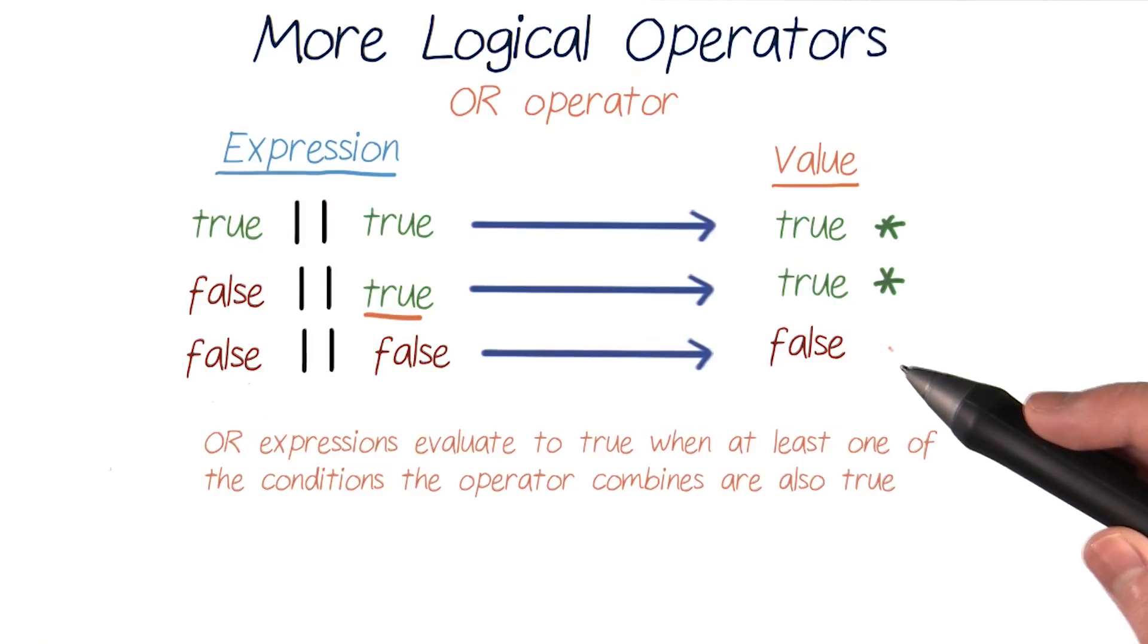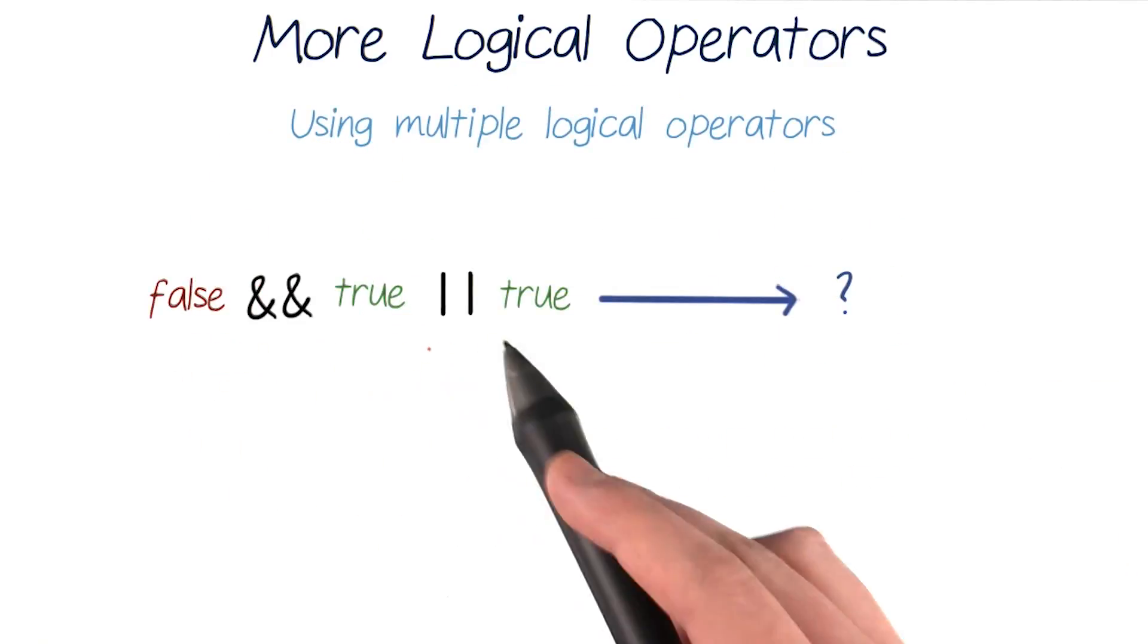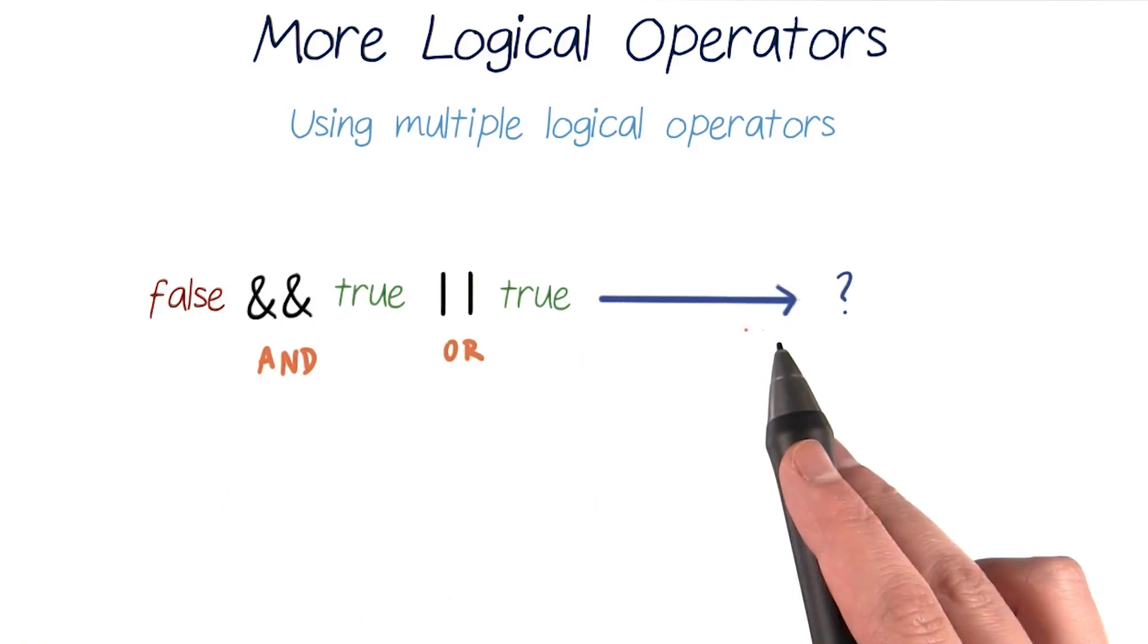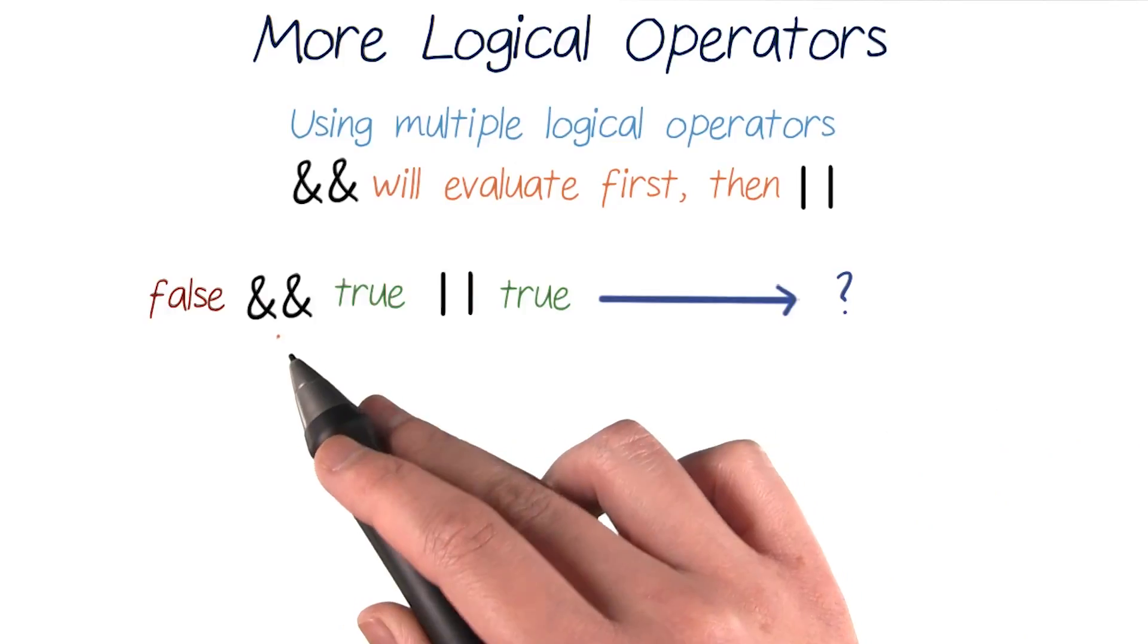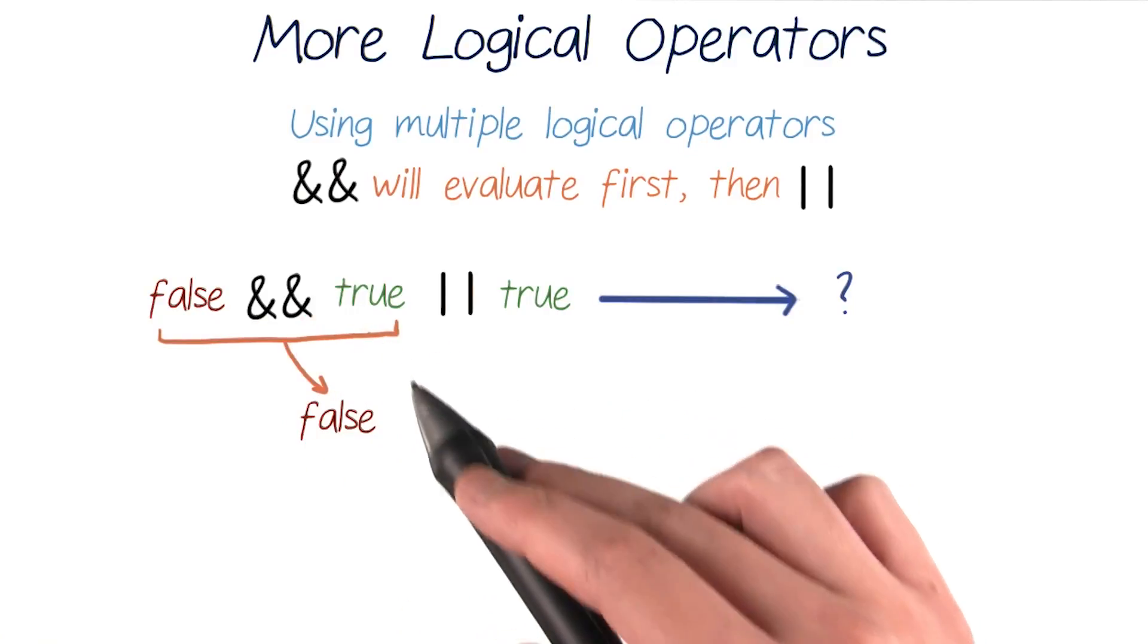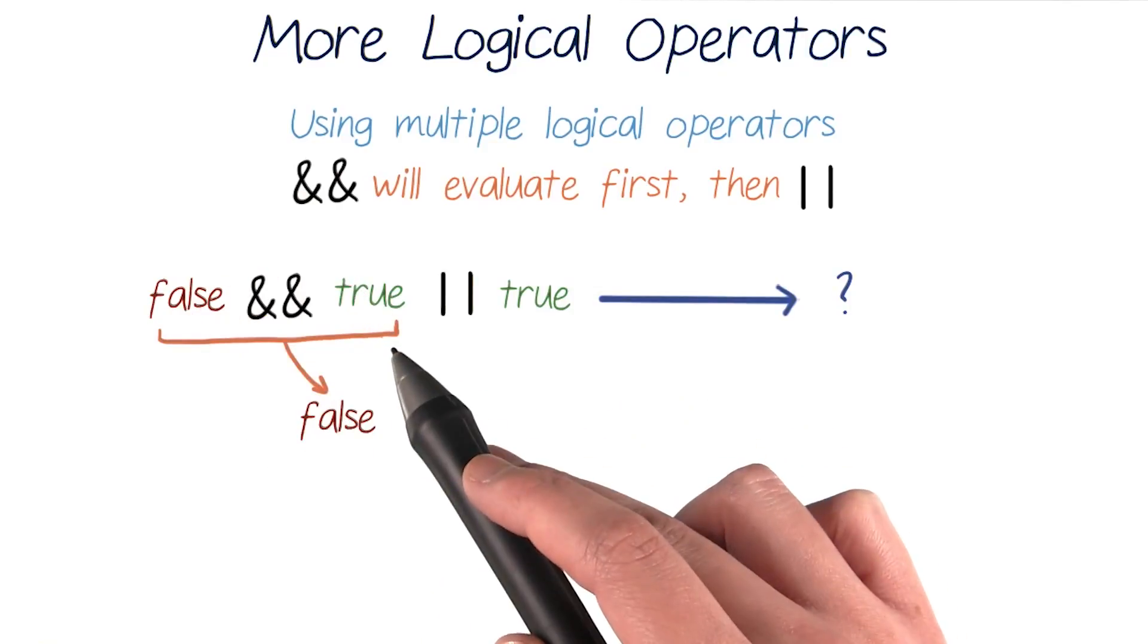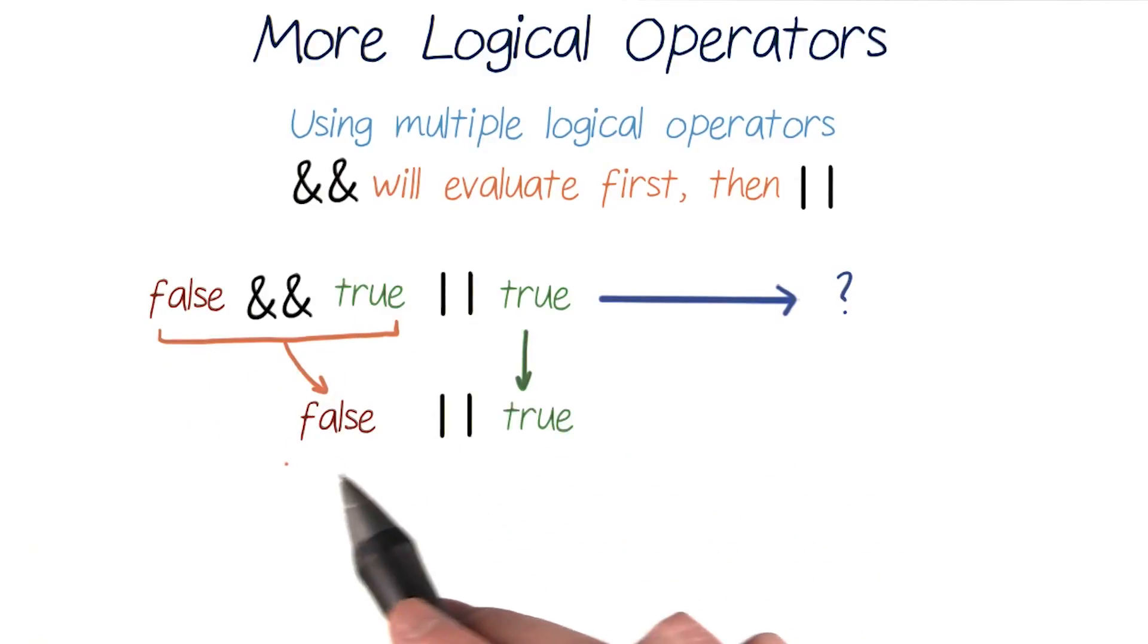So now we understand how ands and ors work, but what if we combine these into longer tests? Here's a longer expression that uses an and and an or operator. This could be read false and true or true. What do you think this evaluates to? In this case, Java will first look at the conditions that are tied together with ands, and then it will move on to conditions tied together with ors. This is the order of operations for logical operators. So it will look at our false and true combo first and say this will evaluate to false, because an and operator requires both of its combined conditions to be true before its combination will evaluate to true. So this expression is equivalent to a false value.